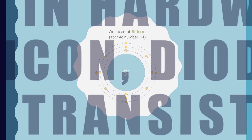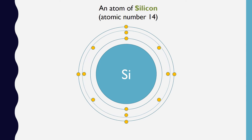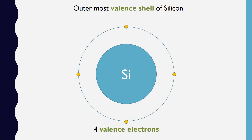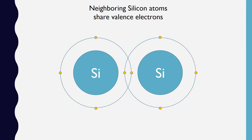Understanding transistors begins with a bit of chemistry. Here is an atom of silicon, with its 14 electrons distributed among three different shells. The outermost shell is called the valence shell and it holds four valence electrons in a silicon atom. When silicon atoms are joined together, or bound to one another, they form a covalent bond in which one valence electron from each atom is shared among the two atoms.